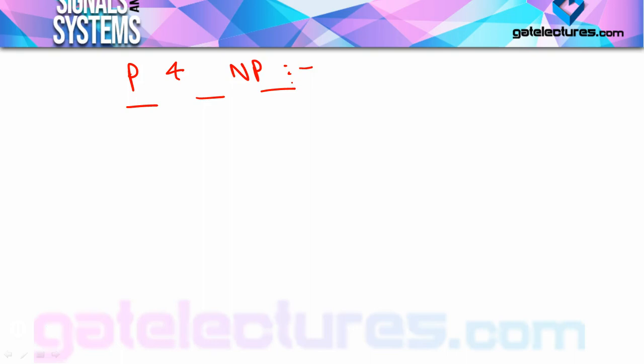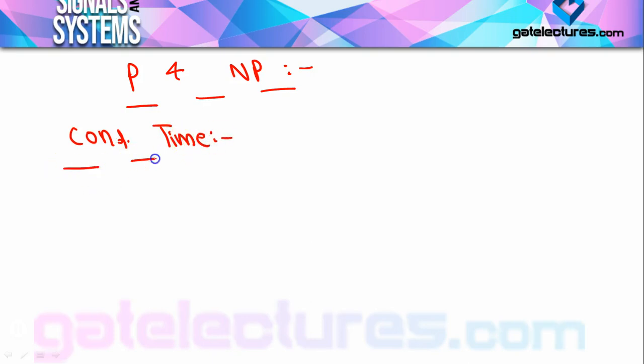Periodic signal क्या होता है? In case of continuous time signal, continuous time periodic and non-periodic signals का analysis करेंगे। तो continuous time में periodic क्या होता है? Simple language में बोलूँ तो: periodic signal repeats itself after a specific time interval. जो signal अपने आपको specific time interval के बाद repeat करते हैं, वो होते हैं periodic signals।